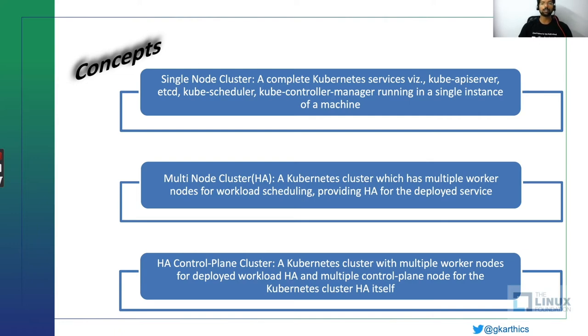So this is how we look at a Kubernetes cluster — whether the control plane is always available, whether the cluster has more than one node for workloads, and whether workloads are spread evenly across nodes.